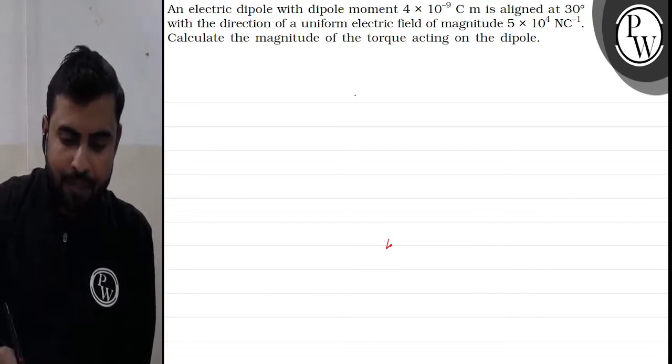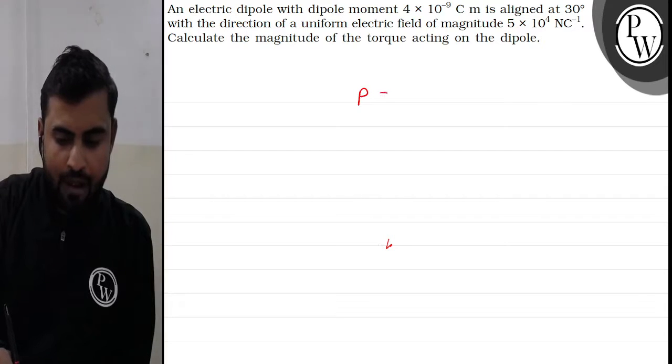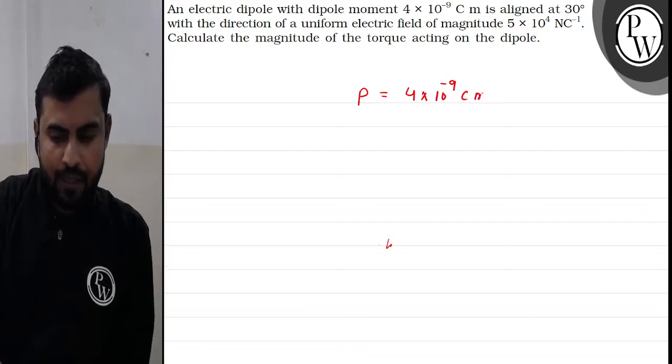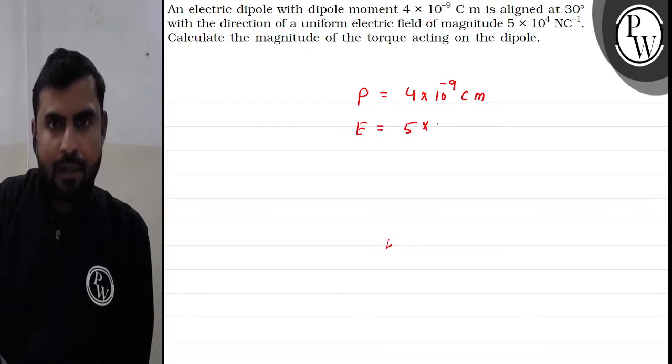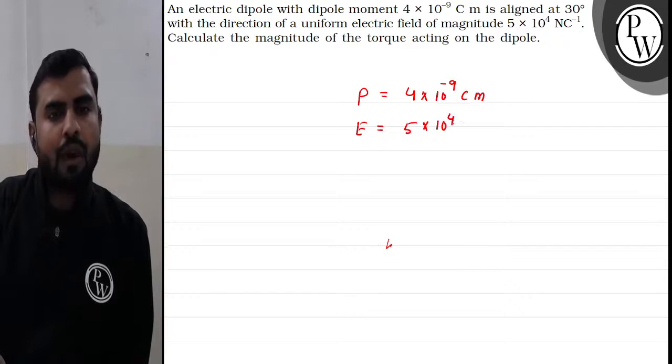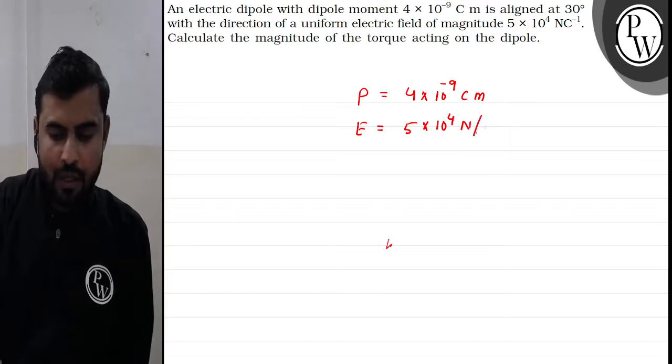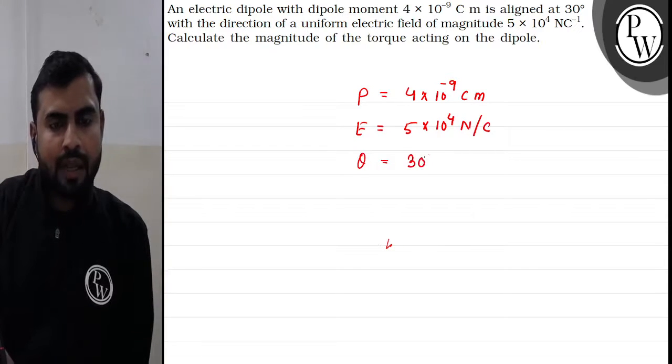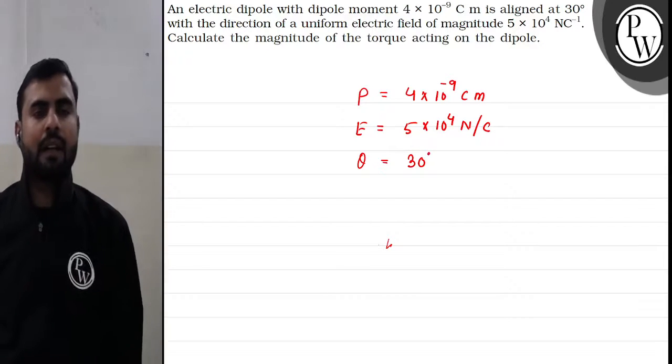We are given that the dipole moment is 4×10^-9 coulomb meter. The electric field is given as 5×10^4 newton per coulomb. And the angle between the dipole moment and electric field is 30 degrees.